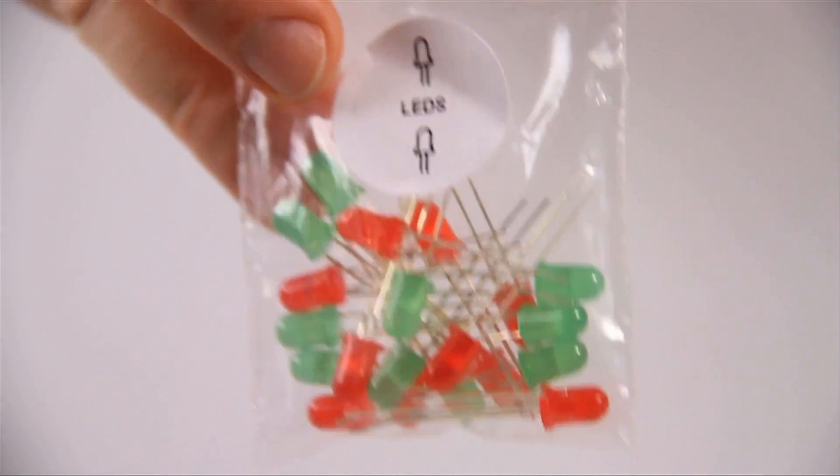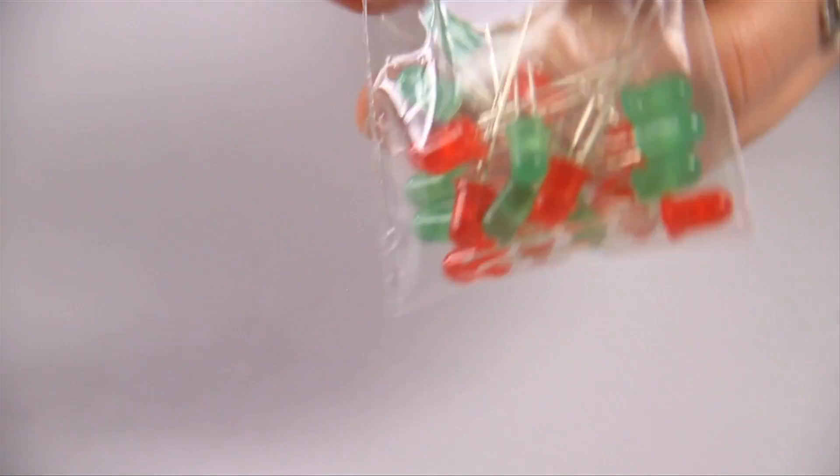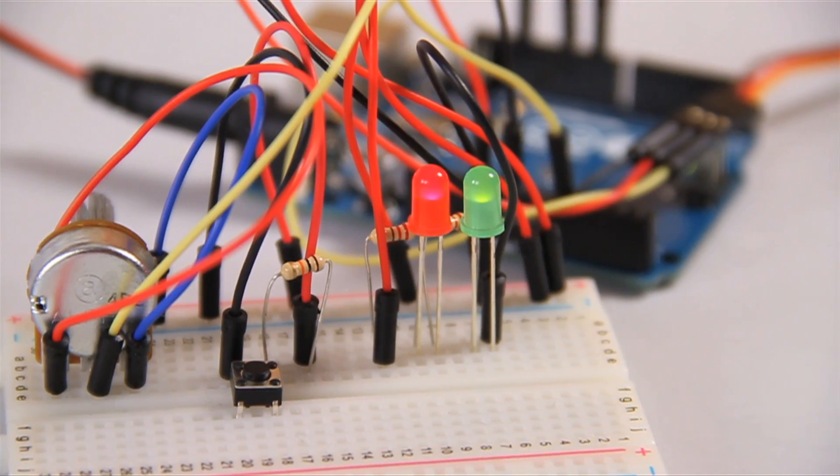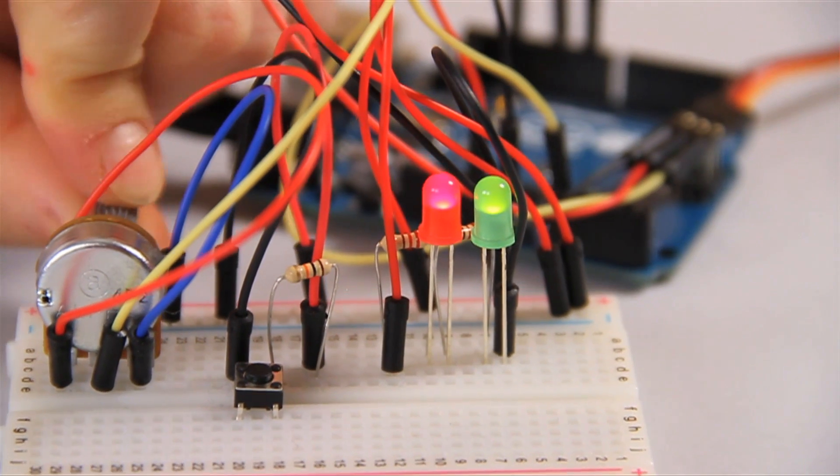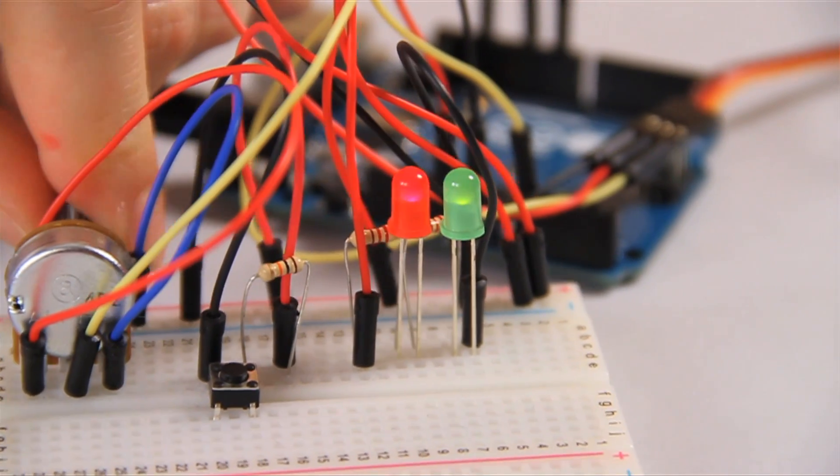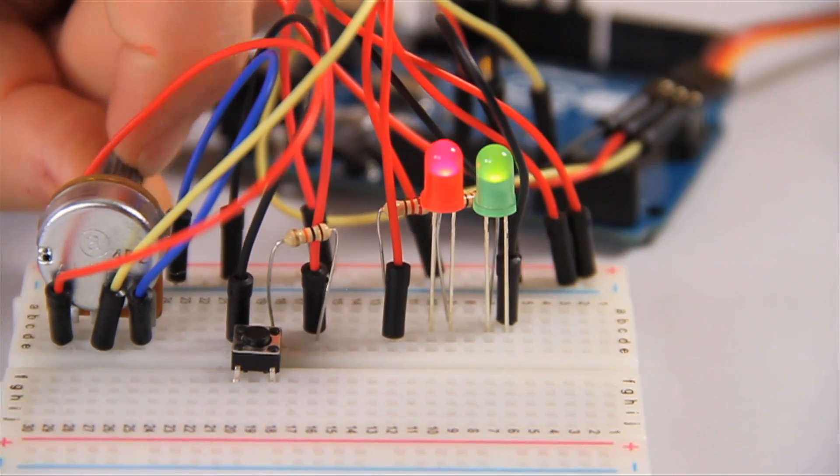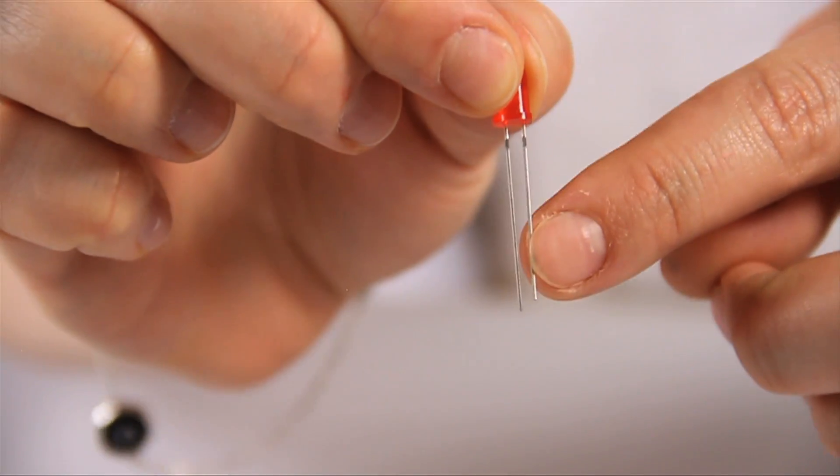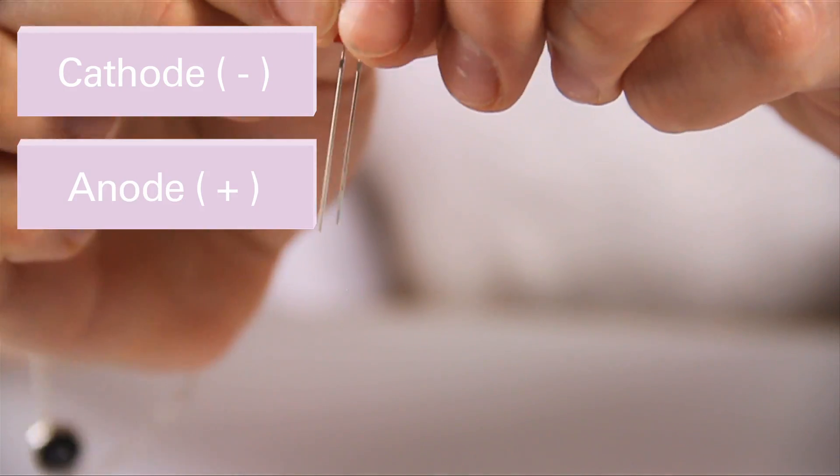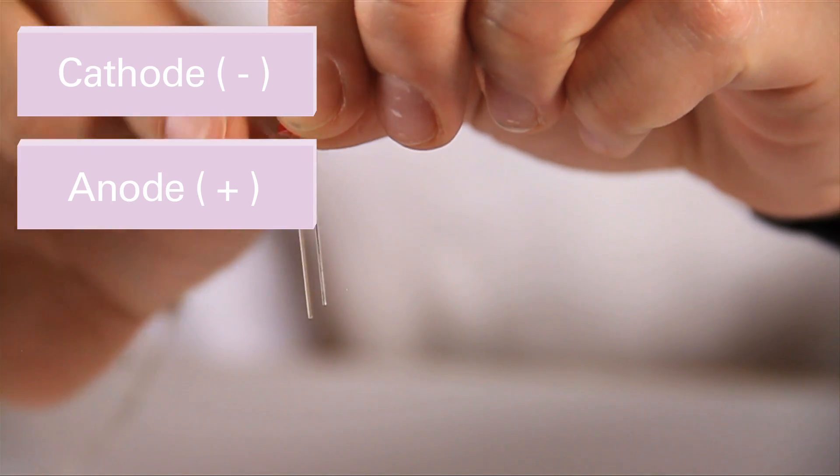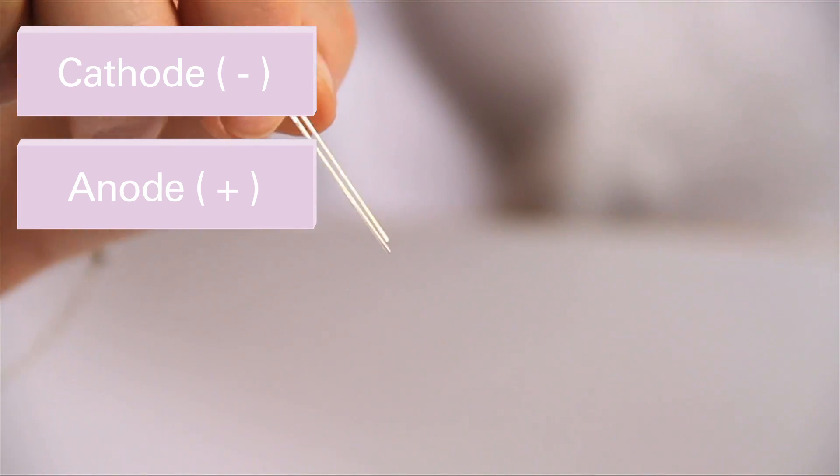So next is your bag of LEDs. You have 10 green and 10 red. LED stands for light emitting diode and they are your basic electronic light. It's another type of diode, which means that it only allows electricity to flow in one direction. That's where the legs are different lengths. So the negative leg, which is the shorter one, is called the cathode. And the positive leg, which is the longer one, is called the anode. If you plug it in the wrong way around, it won't light up. So make sure you plug it in the right way.